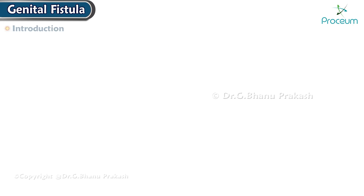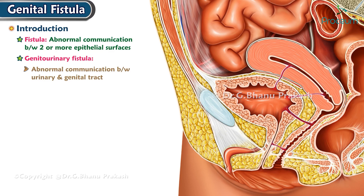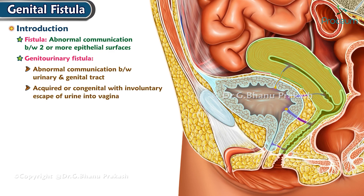Genital fistula introduction. A fistula is an abnormal communication between two or more epithelial surfaces. Genital urinary fistula is an abnormal communication between the urinary and genital tract, either acquired or congenital, with involuntary escape of urine into the vagina.